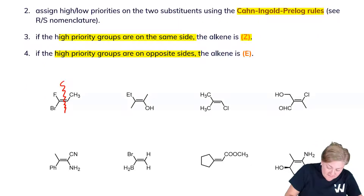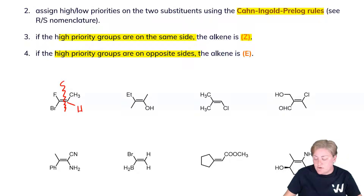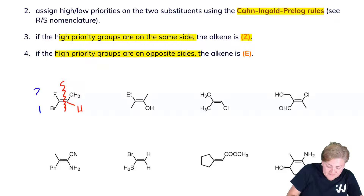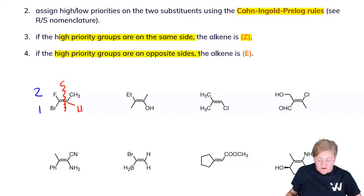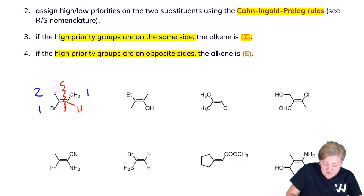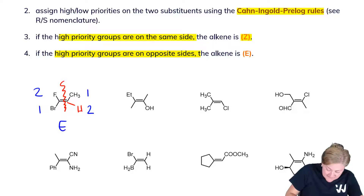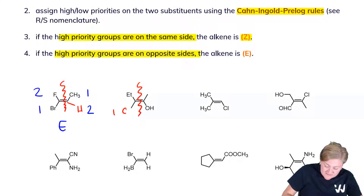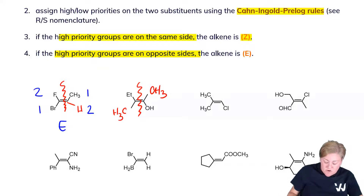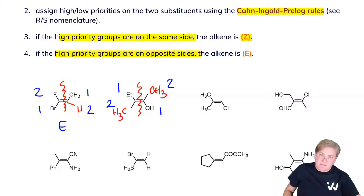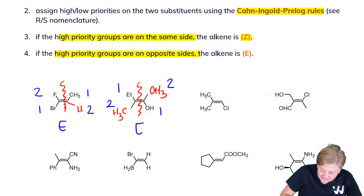So here I'll cut this in half, and I'm going to show the hydrogen atom just for completeness' sake. On the left-hand side, bromine takes precedence over fluorine — we have one and two. The methyl takes precedence over the hydrogen — we have one and two. These are on opposite sides, so this is E. In the next one, we have a CH₃ group and a CH₃ group. We'll give these priorities one and two, one and two. These are on opposite sides again, so this is E.